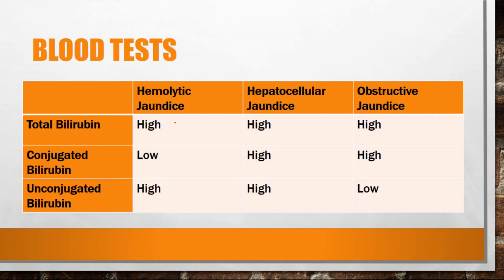In blood tests, total bilirubin is elevated in all three types of jaundice. In hemolytic jaundice, there is increased production of unconjugated bilirubin, so the level of unconjugated bilirubin will be high and conjugated bilirubin will be low. In hepatocellular jaundice, all bilirubin fractions are increased. In obstructive jaundice, the formed conjugated bilirubin cannot pass into the small intestine, so it accumulates — the level of conjugated bilirubin is increased whereas unconjugated bilirubin is low.